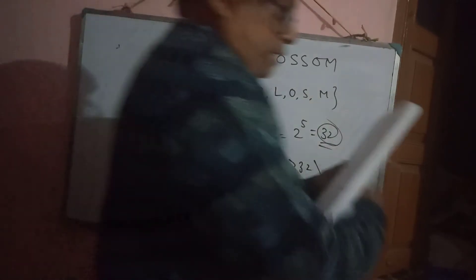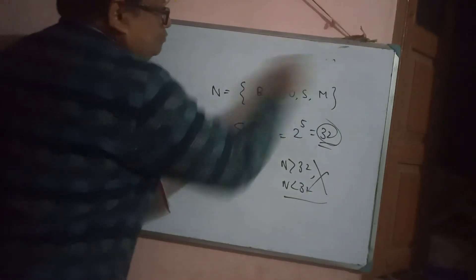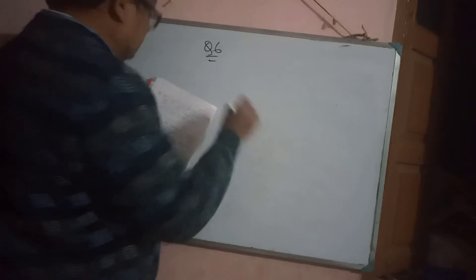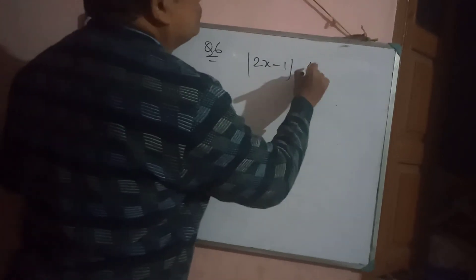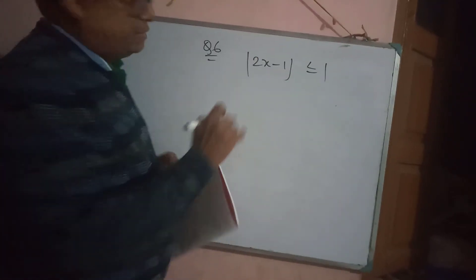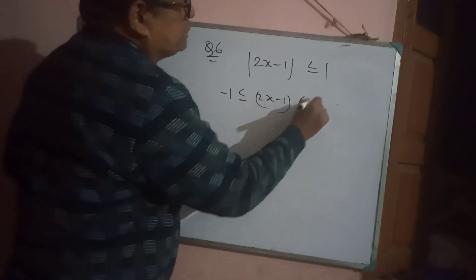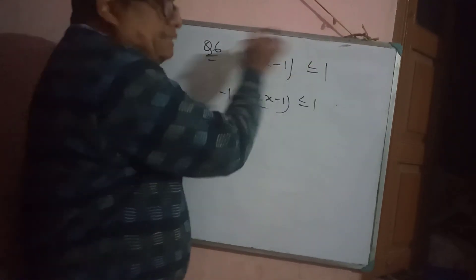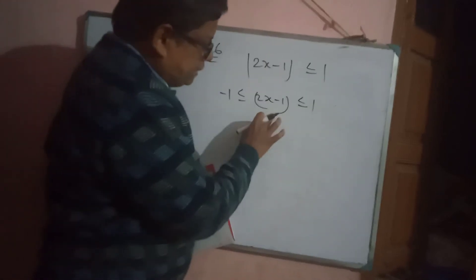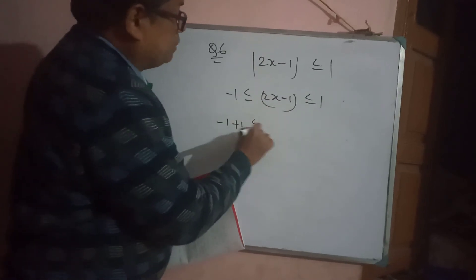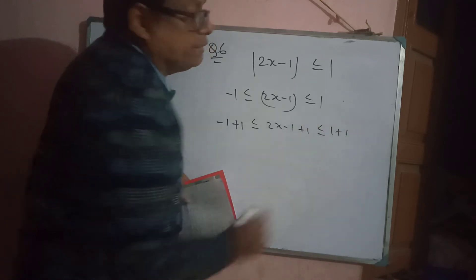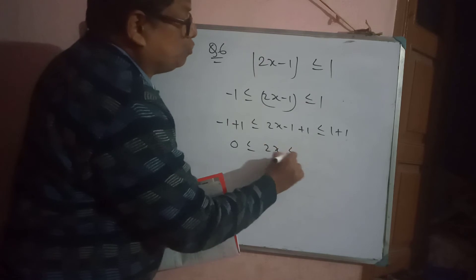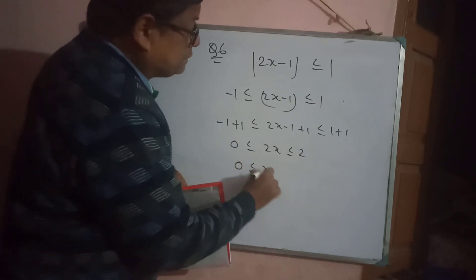Question number 6 — many mistakes here, many time I've discussed this in video class. Keep in mind: when mod |x| inequality with less than or equal to is there, write −1 ≤ 2x − 1 ≤ 1. Add 1 to all parts: 0 ≤ 2x ≤ 2. Divide both sides by 2: 0 ≤ x ≤ 1. This is the correct answer. Question number 6, option A is correct.